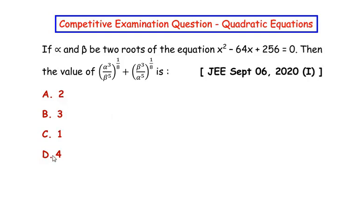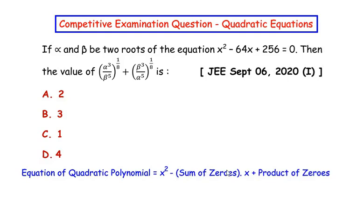Four options are given. In this question, alpha and beta are the two roots of the given quadratic equation. Let us begin by writing the general equation of a quadratic polynomial: x² - (sum of zeros)x + (product of zeros). The given expression in the question is also a quadratic equation, which is x² - 64x + 256.